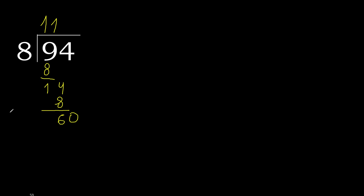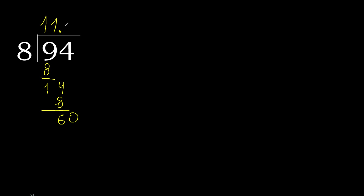Always complete with zero. Here: point, zero point. Sixty. Eight multiplied by eight is greater. Multiply by seven — okay. Subtract.